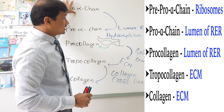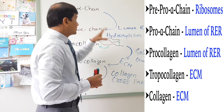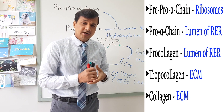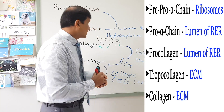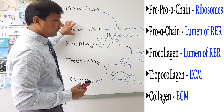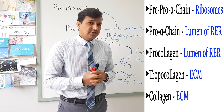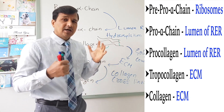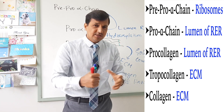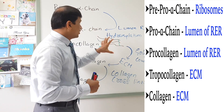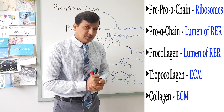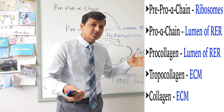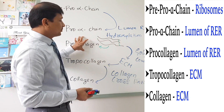To review: pre-pro-alpha chain is synthesized on the surface of the rough endoplasmic reticulum. It has a signal peptide that directs it into the RER lumen, where the signal sequence is clipped to give the pro-alpha chain. Three pro-alpha chains are needed to make a collagen molecule. They undergo hydroxylation in the RER lumen by prolyl hydroxylase and lysyl hydroxylase, and these two enzymes require ascorbate as their coenzyme. The hydroxylation increases the number of hydroxyl-containing amino acids; the three chains come together via disulfide bridges, and hydroxyl-containing amino acids participate in hydrogen bond formation.